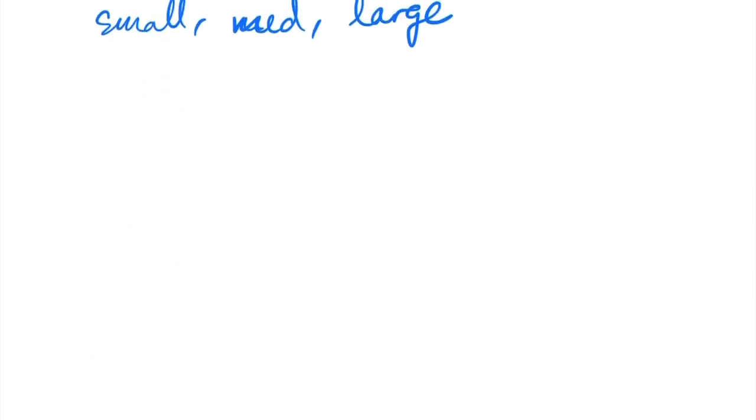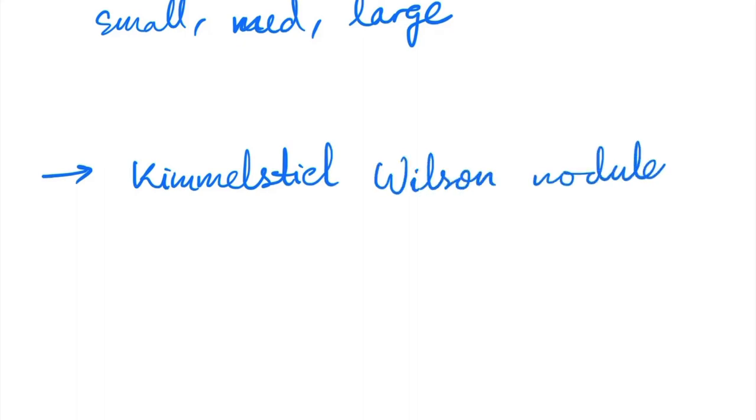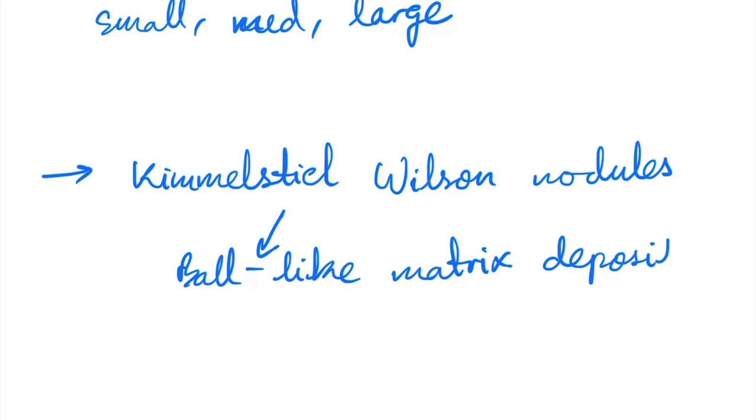An important characteristic finding here would be certain glomerular lesions, specific one being Kimmel-Steele-Wilson nodules. As the name suggests, it's a characteristic appearance of the glomerulus with characteristic ball-like matrix deposits. This can be detected using the PAS test, so it's PAS positive.